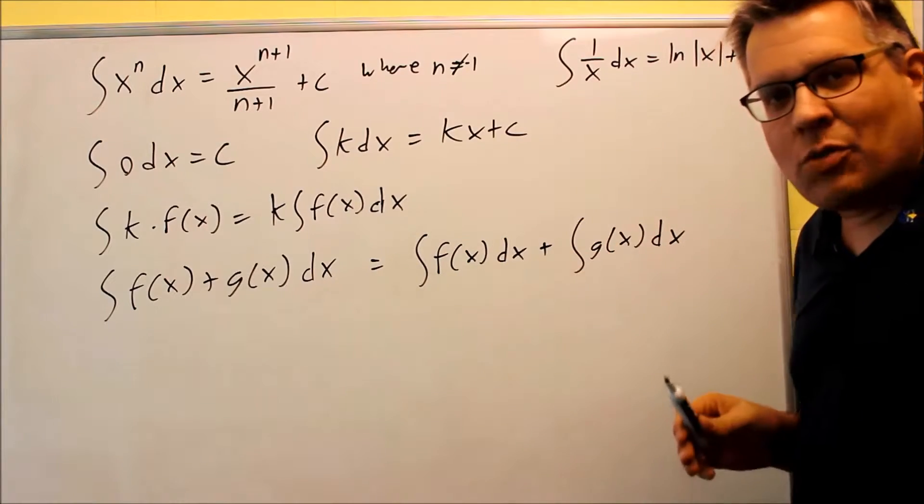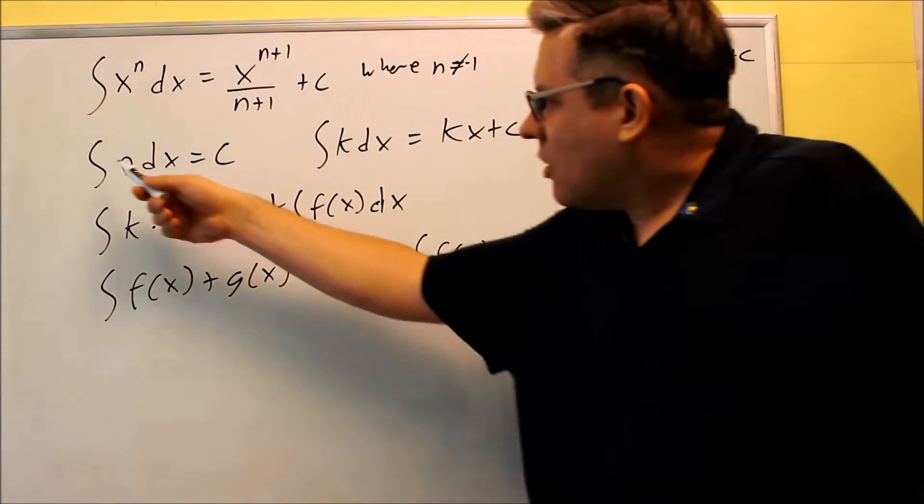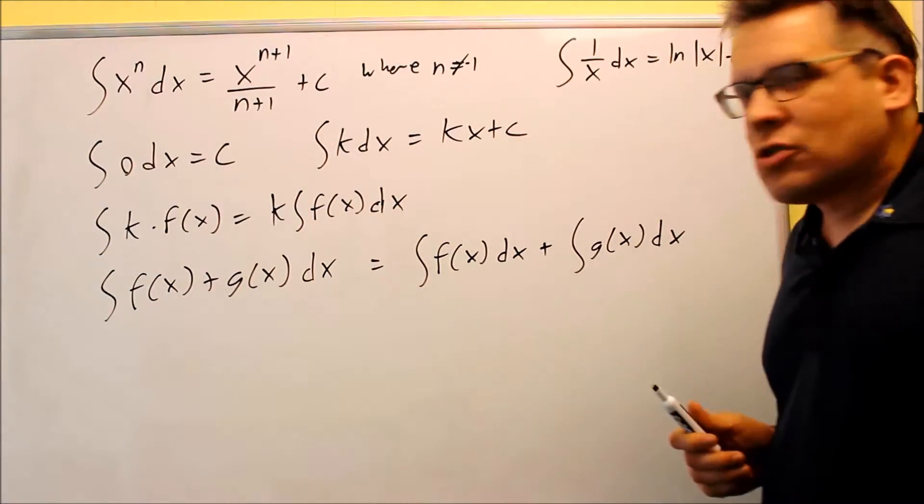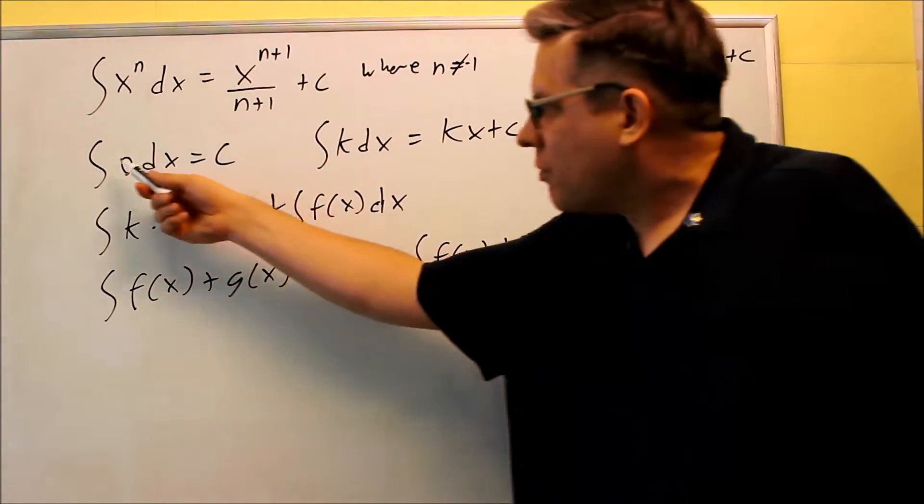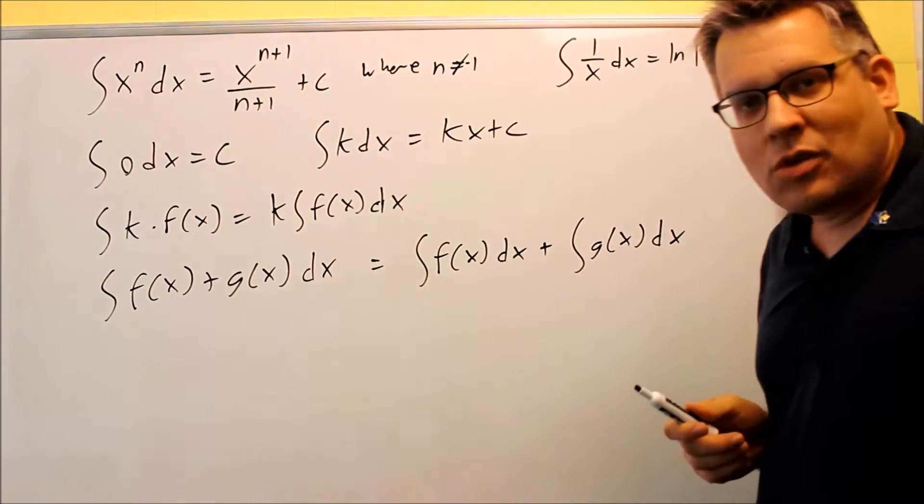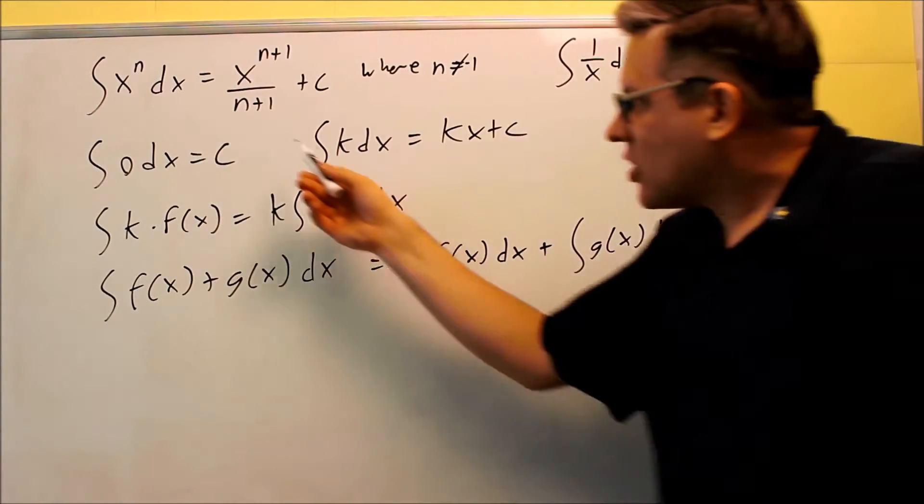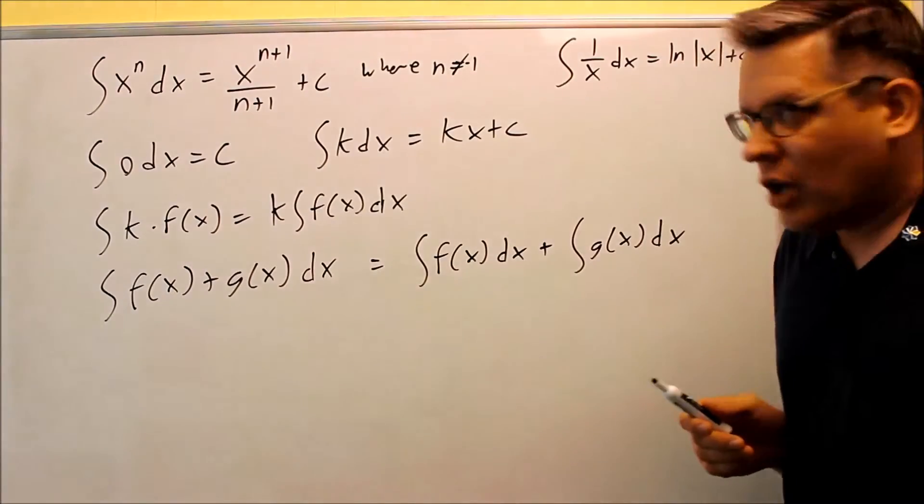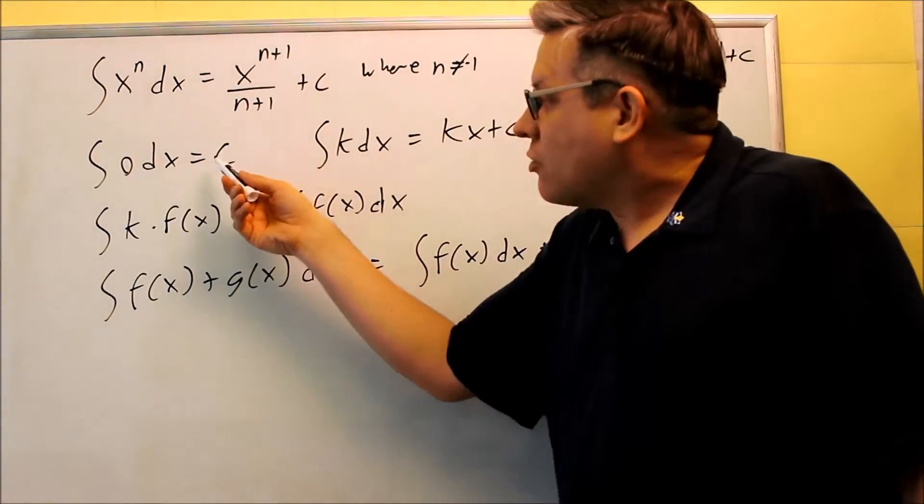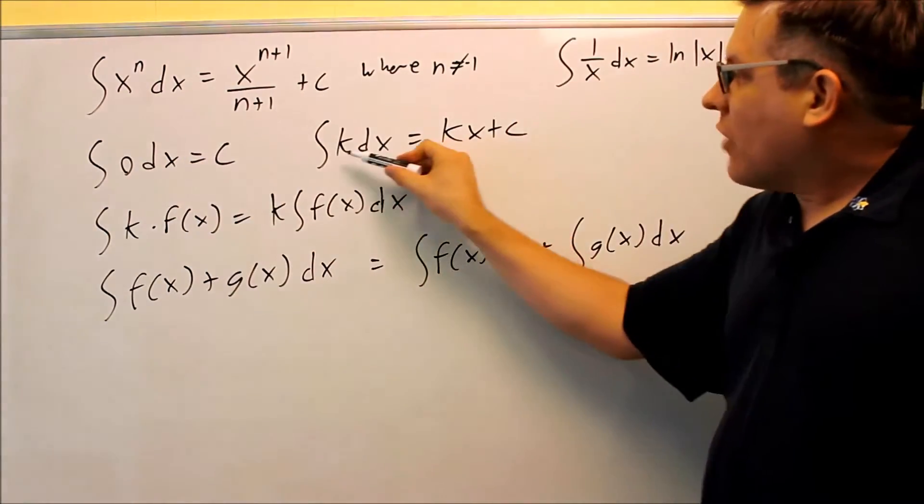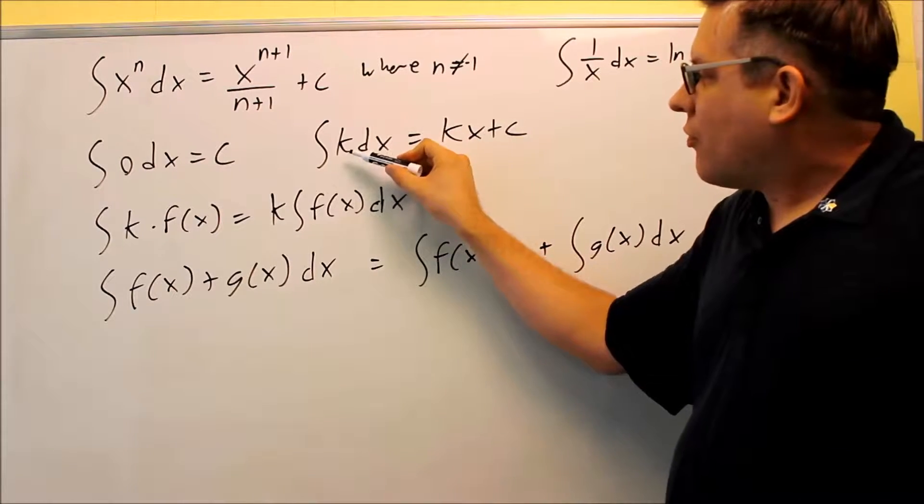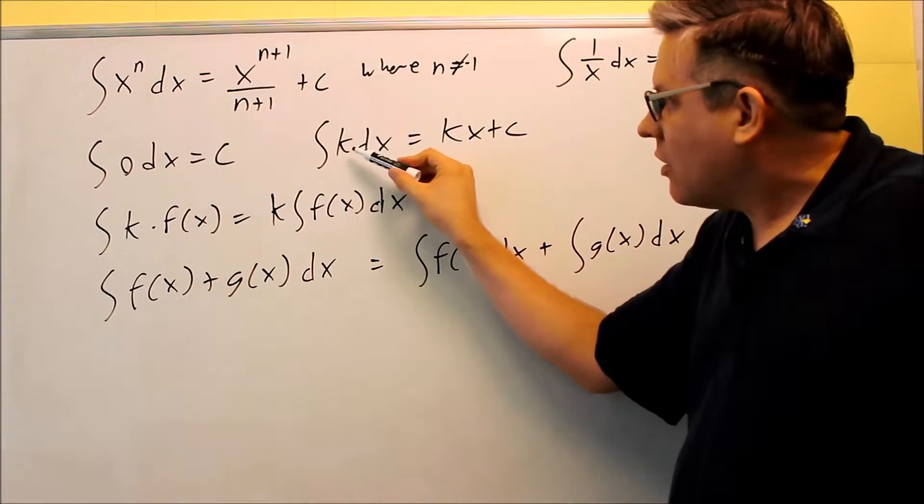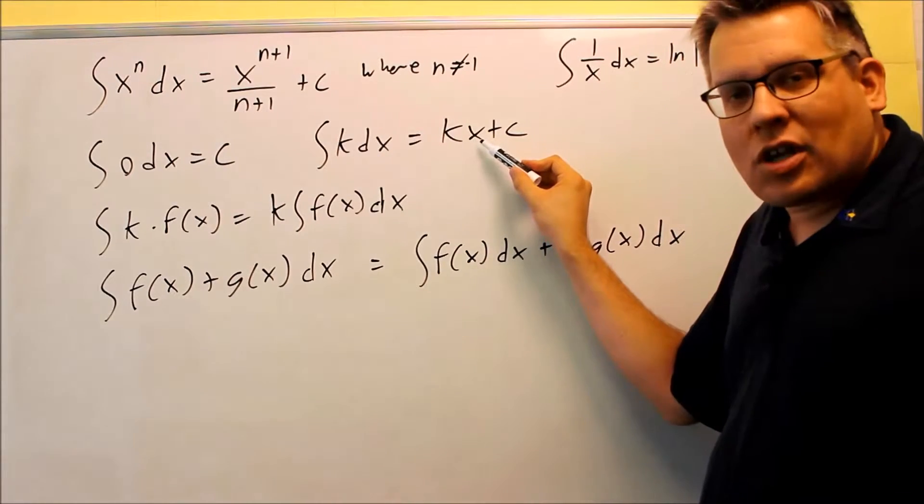Here's a couple other properties that we have that goes along with this. If you have zero, we're doing the anti-derivative of zero or the integral of zero, you're just going to get a constant there. Why? Because if I take a constant and take the derivative, I'm going to get back to zero again. So the anti-derivative will give you c. If you have a k by itself, just a number, like an integral of two dx, something like that, then what happens is you get an x that comes back.